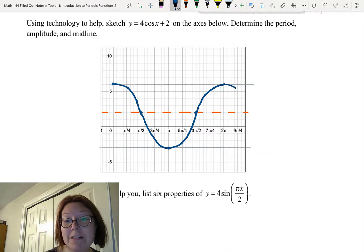Back up to 3 pi over 2 comma 2, and then back up to 2 pi comma 6. And the graph continues after that, going in both directions, following that same cyclical pattern.